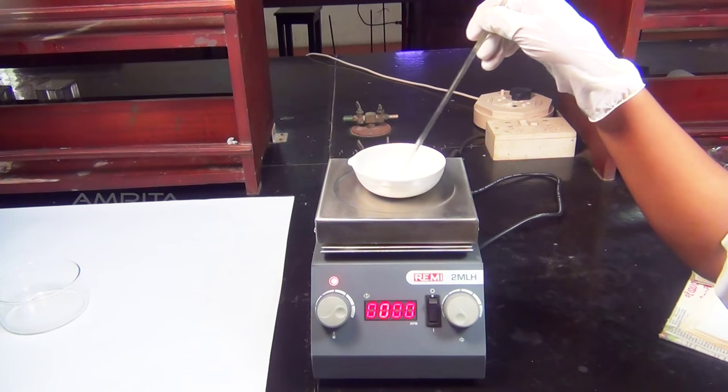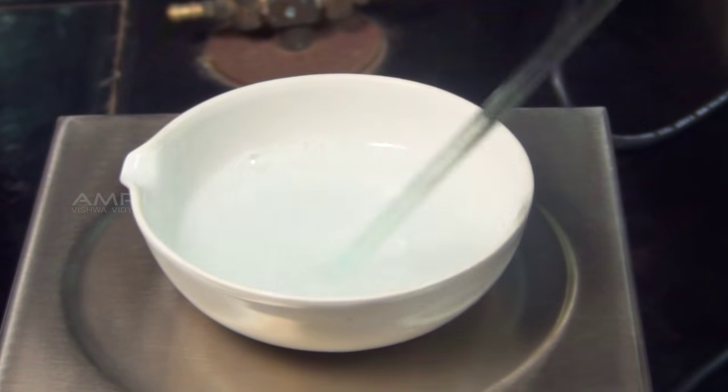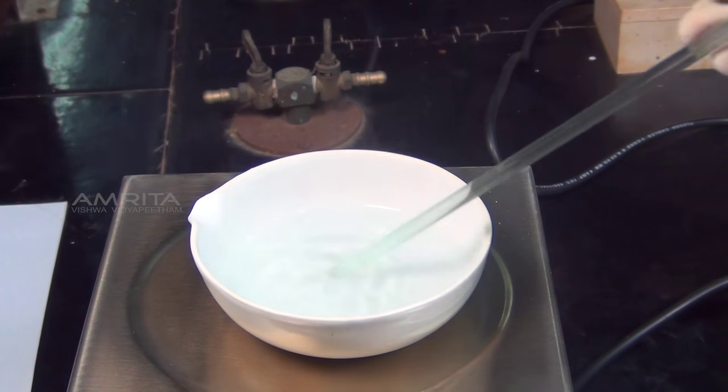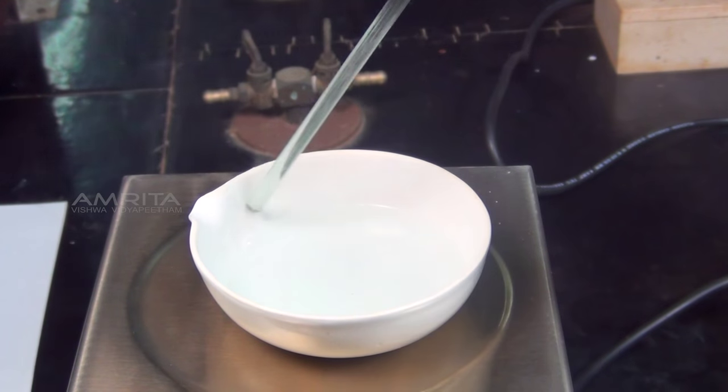Heat the solution in the china dish over the hot plate. To avoid crust formation on the side of the dish, stir the solution continuously with a glass rod.